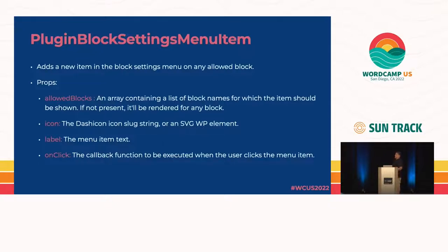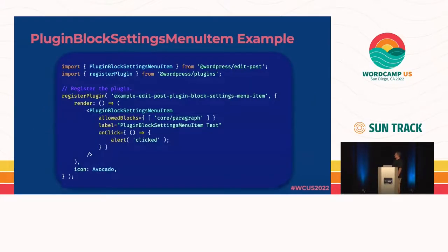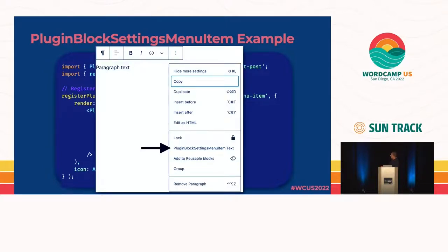Then we have icon, the label that will appear, and onClick. In this example, the allowedBlocks targets the paragraph block with a very long label, and clicking it will alert 'clicked' — the most useless code example I could possibly come up with. Here's what it looks like: I've selected this block, the item shows up, and if I click that, it will alert.